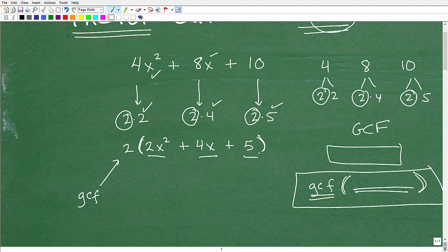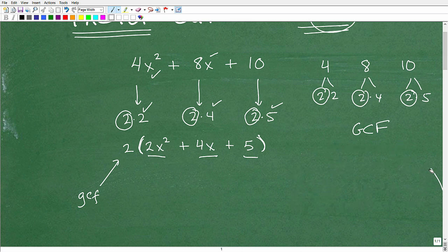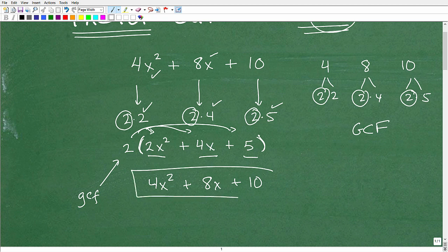The number one way to check if you factored correctly with the greatest common factor is to distribute this 2, or whatever the greatest common factor is, back into the problem. So if I multiply it back in using the distributive property, 2 times 2x squared gives me 4x squared, plus 2 times 4x gives me 8x, plus 2 times 5 gives me 10. There is the answer, and that is the original expression that I wanted to factor.